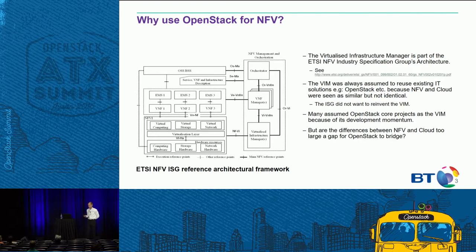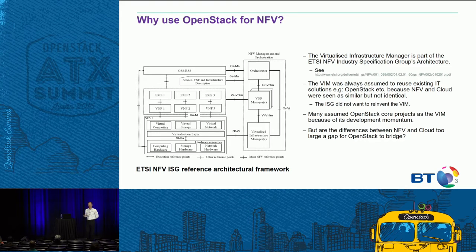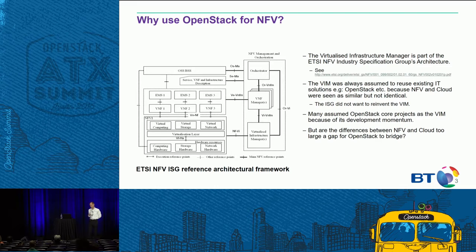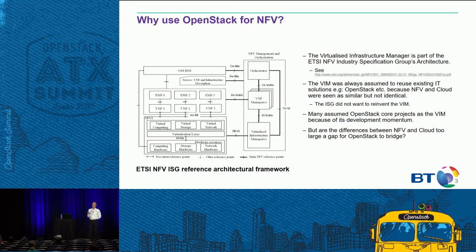When we came up with this architecture, which is now about three years old, it was always assumed when drawing that diagram with the VIM that OpenStack would be one of those candidates. We didn't want to reinvent OpenStack — we really wanted to reuse as much as possible and not go out and invent new stuff. But the big question is: are the differences between NFV and cloud too large a gap for OpenStack to bridge? There's been lots of debate, and you've got to be aware of the use cases you're using for NFV as to whether OpenStack applies to them.